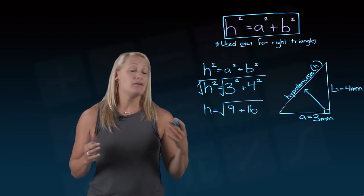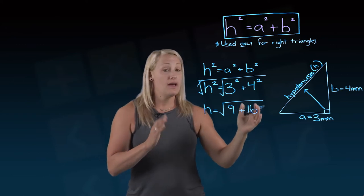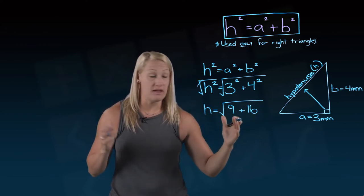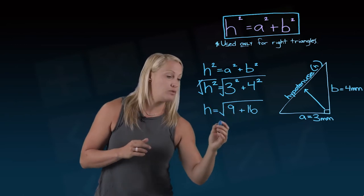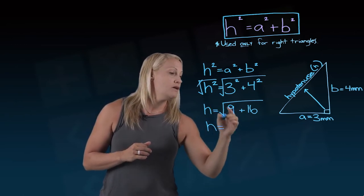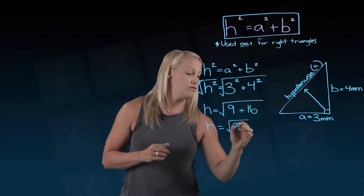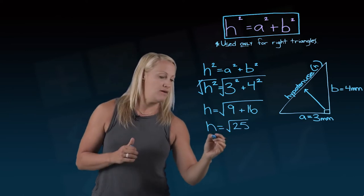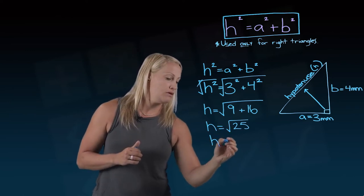And then make sure in your calculator or however you're calculating this, a square root sign is kind of like a bracket. I actually have to add those numbers together before I press that square root button on my calculator, if that's the way I'm calculating this. So 9 plus 16, that's 25.